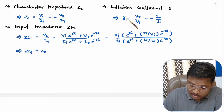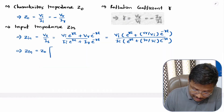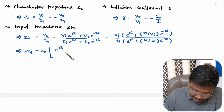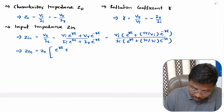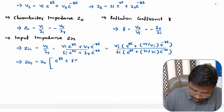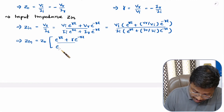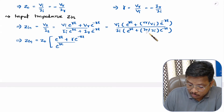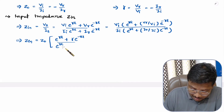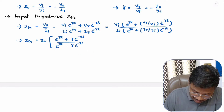Now, VR/VI is the reflection coefficient ρ. So the equation becomes: numerator is e^(γL) plus ρ·e^(−γL), and in the denominator we have e^(γL) minus ρ·e^(−γL), because the IR/II term carries a negative sign of the reflection coefficient.